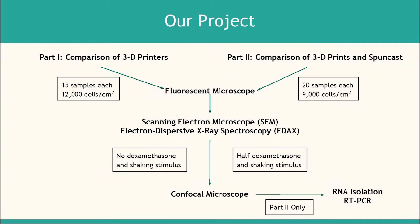Our project is divided into two parts. The first part is a comparison of the 3D printers. We created 15 rectangular samples from each printer with dimensions 10mm by 30mm by 2mm and plated cells at a density of 12,000 cells per centimeter squared. Starting from day one, every other day, we replaced the media and imaged the samples under the fluorescent microscope. On day five, we conducted analysis on the scanning electron microscope for surface topography and on the electron dispersive X-ray spectrometer for surface composition. On day 42, we used confocal microscopy to assess the biomineralization level of our cells.